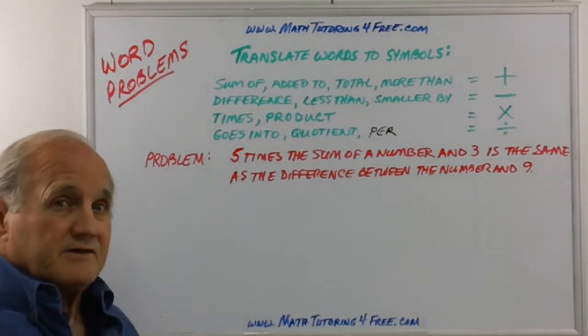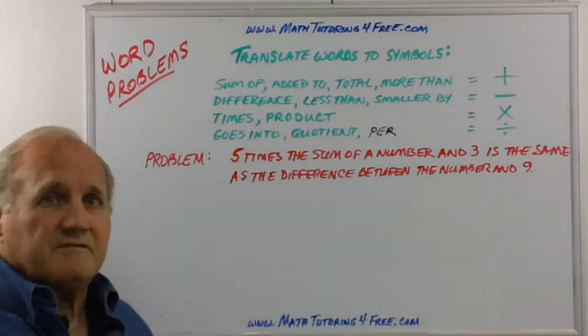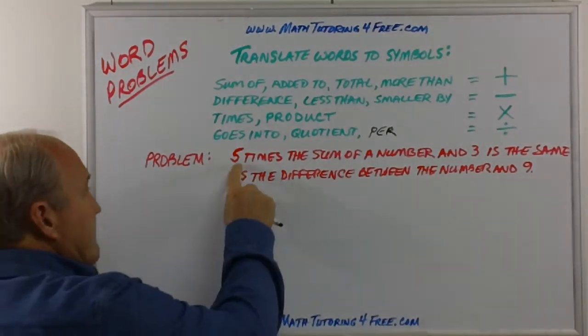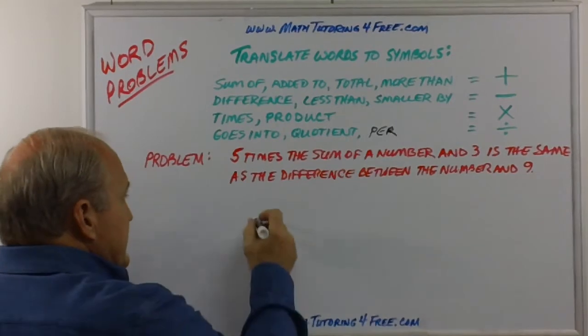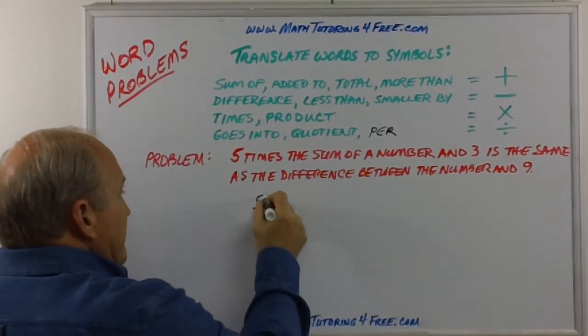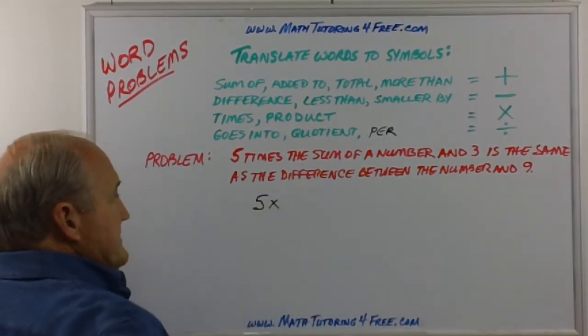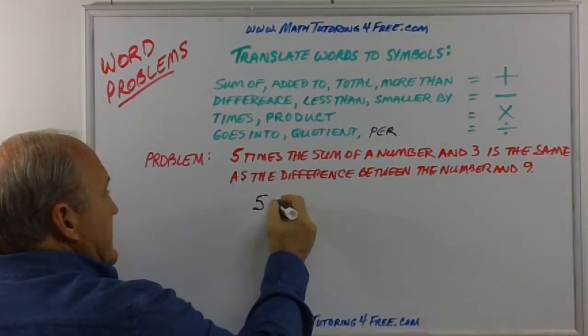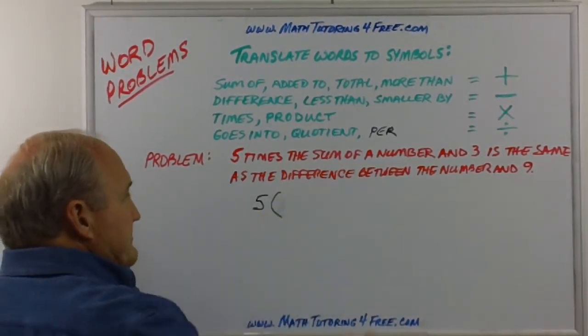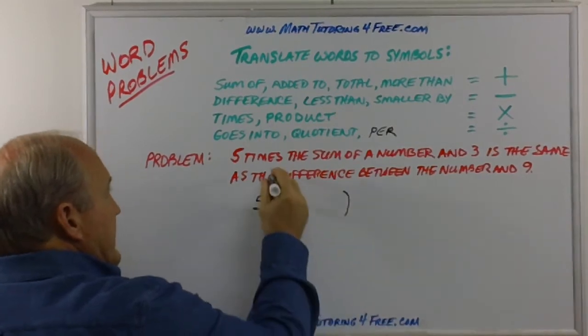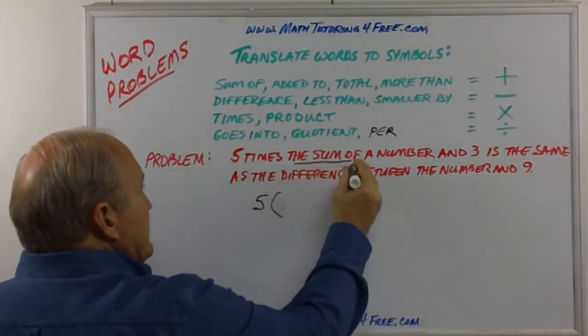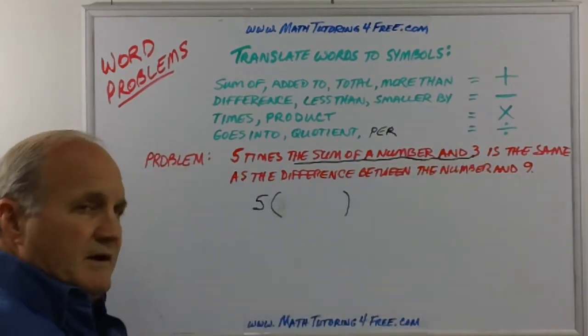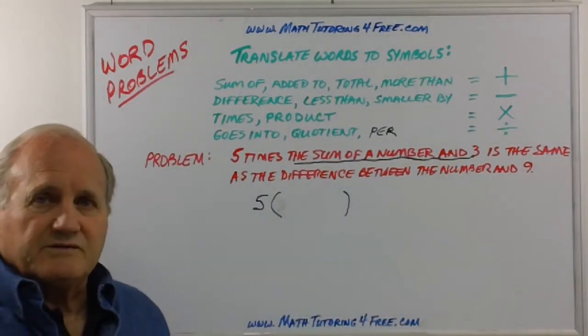Now a lot of kids are going to read that and just go oh I don't even know where to begin. But let's take it as we read. Five times, so that tells me that I'm going to have five in either a times symbol or since the next one's kind of complex I'm going to use parentheses.